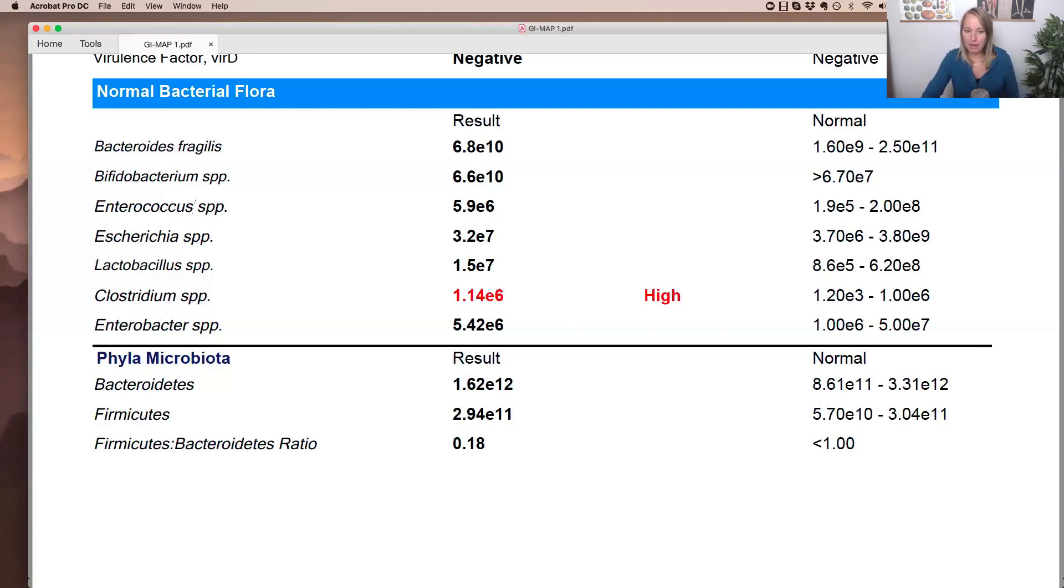So if you're seeing imbalances, I would always recommend some sort of probiotic. If you have low lactobacillus, you may go with a higher lactobacillus probiotic. Like I said, if you have low bifidobacterium, I would go with the factor four Clara loves cause it is a higher bifido strain.